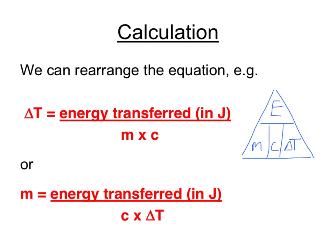If, for example, we wanted to work out what the temperature change was, we would put our finger over that variable in the triangle. The temperature change would then be equal to the energy divided by the mass times the specific heat capacity. As long as you can construct a triangle from the equation on your exam paper, you should be able to work out the energy, the mass, the specific heat capacity, or the temperature change if you know everything else in the equation.